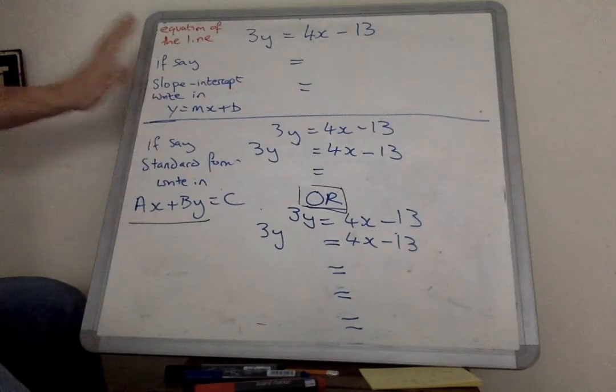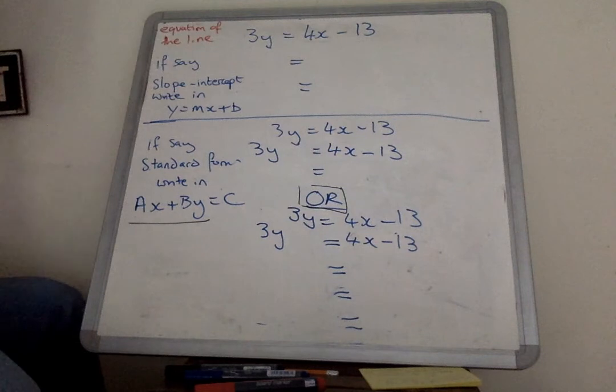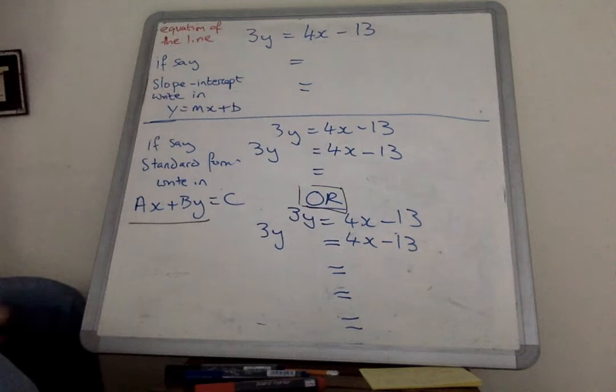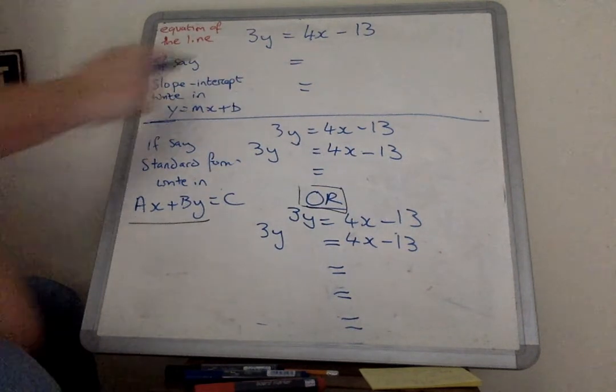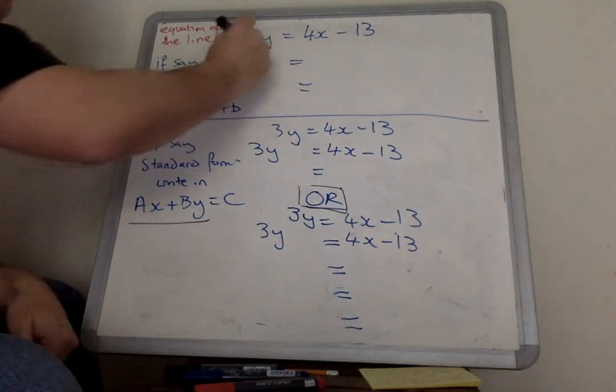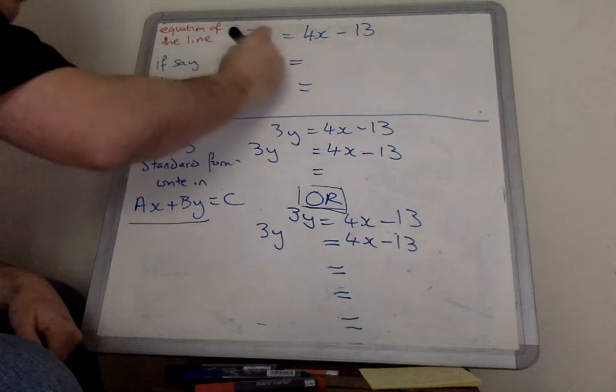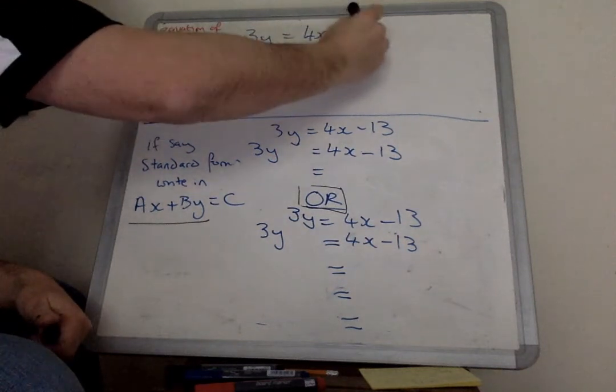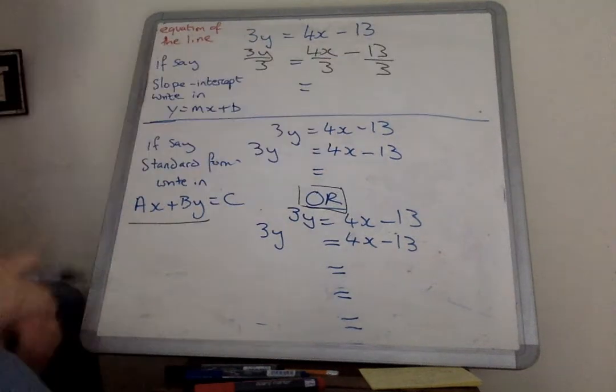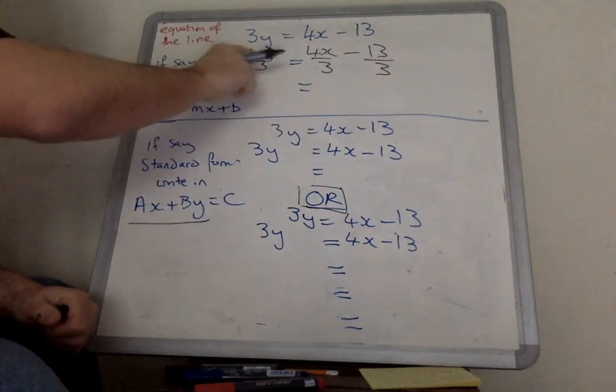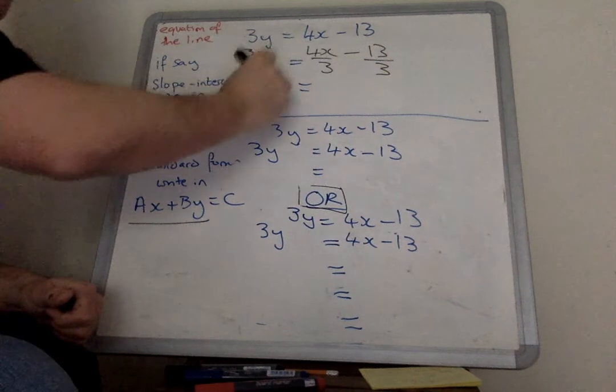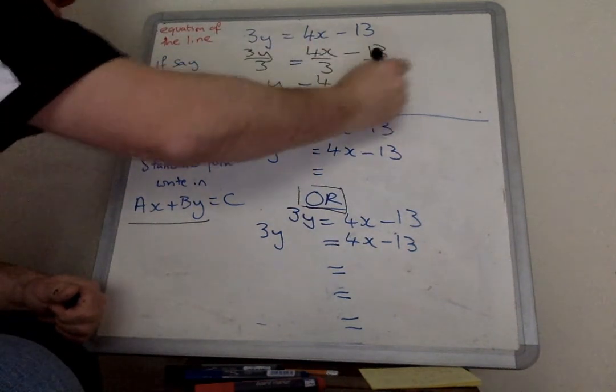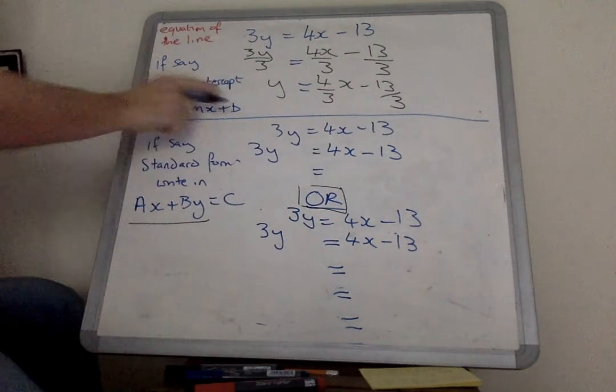So on here, they're asking you to turn this equation into slope-intercept form. So stop the video and see if you can do that. Okay, you should have said well, we need to make y on its own. So to do that, I'm going to make the 3 disappear into an invisible one by dividing both sides, everything by 3 at the same time. So 3 divided by 3 is 1. I'm left with y. Here I'm quite happy to leave everything in fractions. I've managed to leave my answer in slope-intercept form.